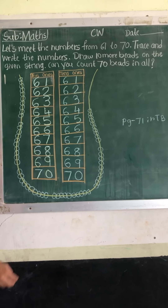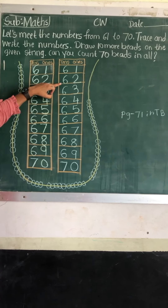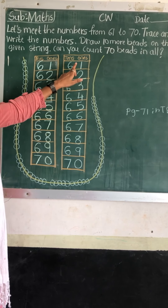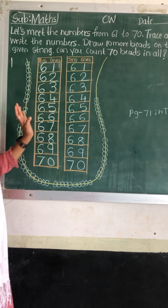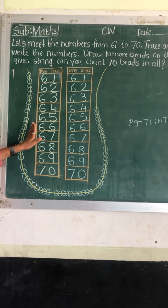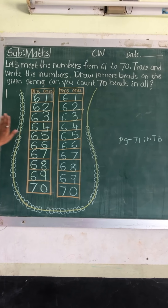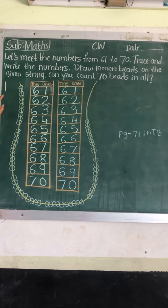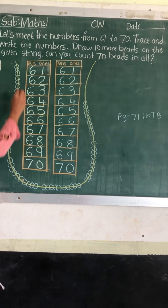Okay, let's write it again: 61, 62, 63, 64, 66, 67, 68, 69, 70. How to write 6 — always write 6 in the tens place and 1, 2, 3, 4, 5 in the ones place. Just like I have written in your textbook. Now let's start counting these beads.